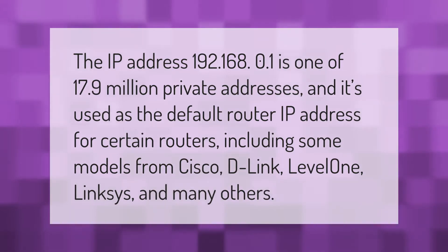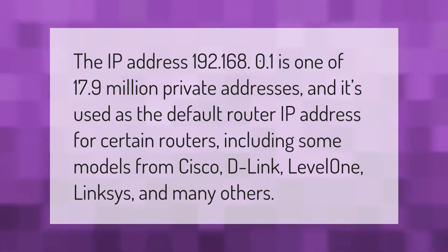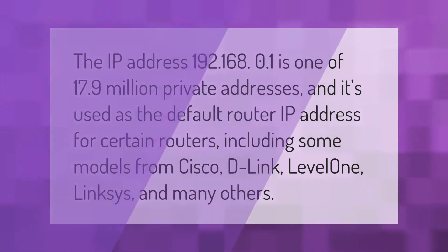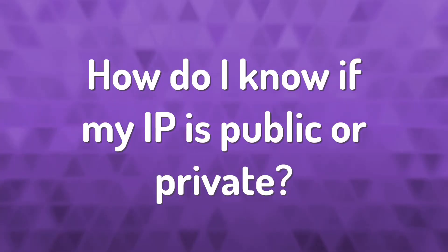The IP address 192.168.0.1 is one of 17.9 million private addresses and it's used as the default router IP address for certain routers, including some models from Cisco, D-Link, Level One, Linksys, and many others.